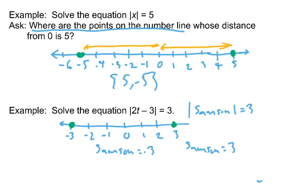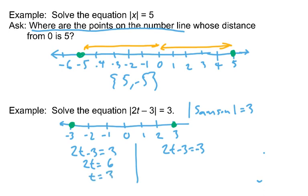This equation can be rewritten as two equations. Either that expression inside the absolute value bars is 3 units to the right or it's 3 units to the left. The quantity in the absolute value bars is either at 3 or at negative 3. That gives you two equations to solve. Now we solve for t as if these were just ordinary linear equations. In the one on the left, if I add 3 to both sides, I'll get 2t equals 6. Dividing both sides by 2, I get t equals 3.